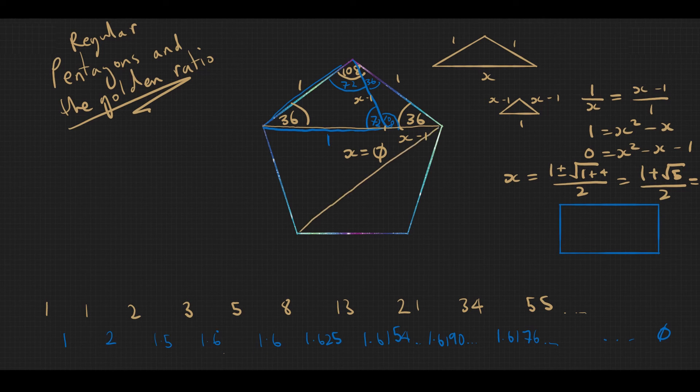And so therefore x is phi, and the diagonal of a regular pentagon—obviously this one over here is also the same as well—a diagonal of a regular pentagon is phi if the side length of the pentagon is 1.